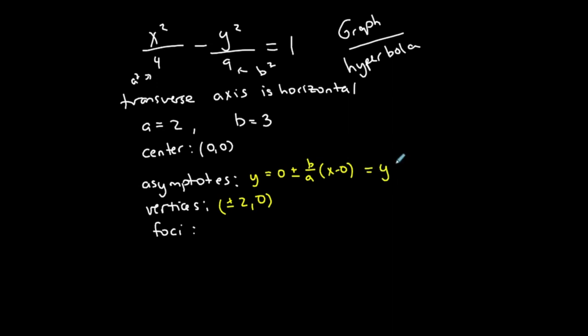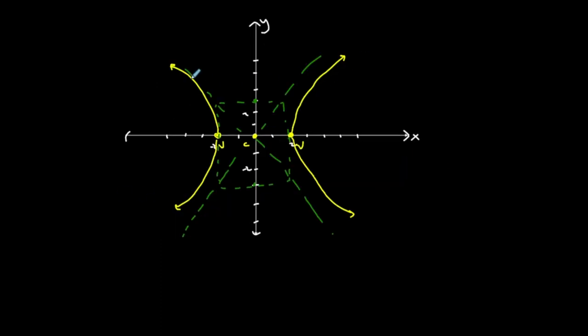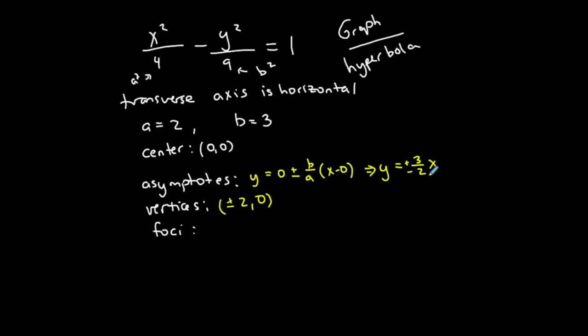So in this case, y is equal to, we want to simplify, 3 halves x. This is the equation, or plus or minus, I should say, because one asymptote has got a positive slope and the other one has a negative slope. So these are the equations of the two asymptotes here.